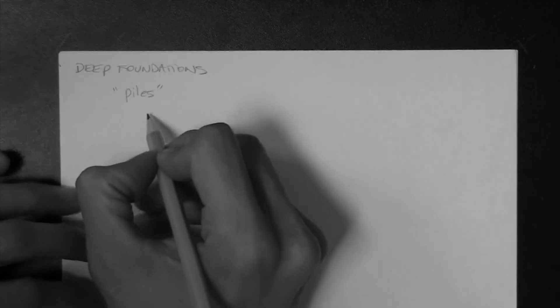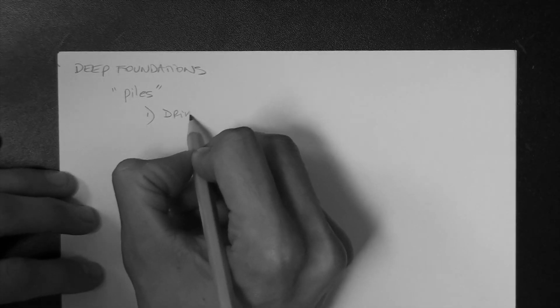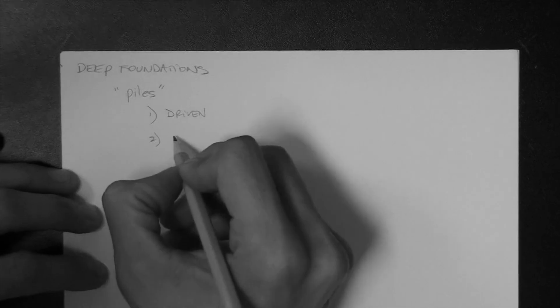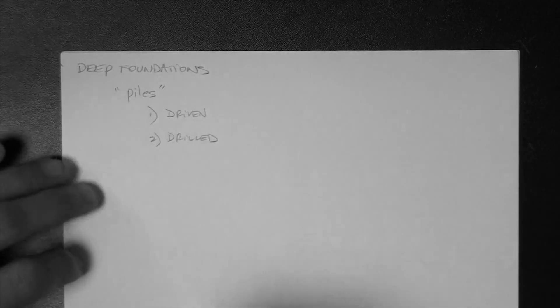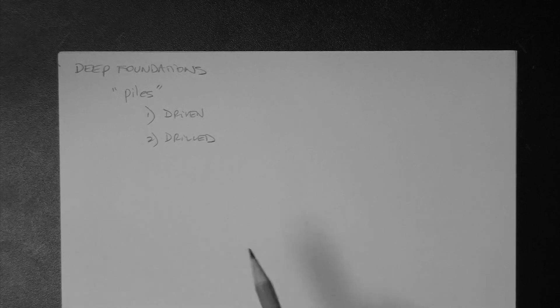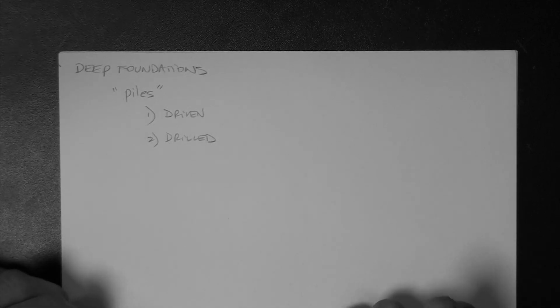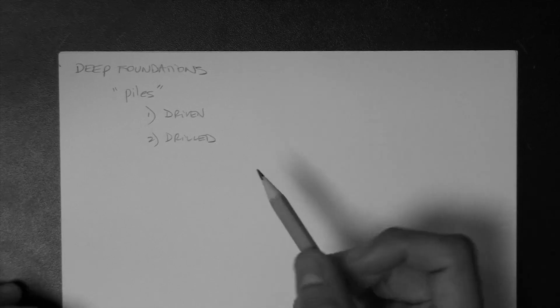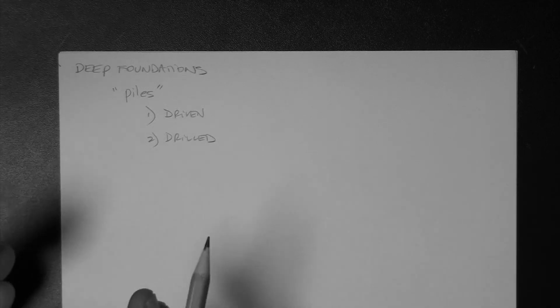There are two types of piles. There are driven piles, and then there are drilled piles. Now, there are different names for drilled piles that are used interchangeably. For example, some people use drilled shafts or drilled caisson. But in general, if you speak of driven piles and drilled piles, I would say all your technical engineers that know what they're doing will understand you.